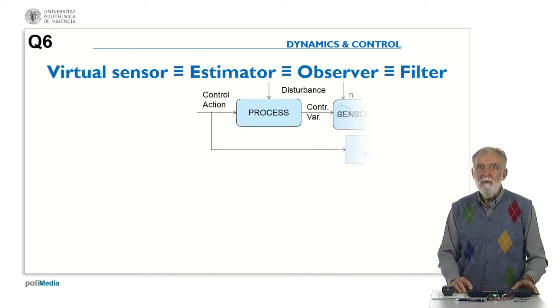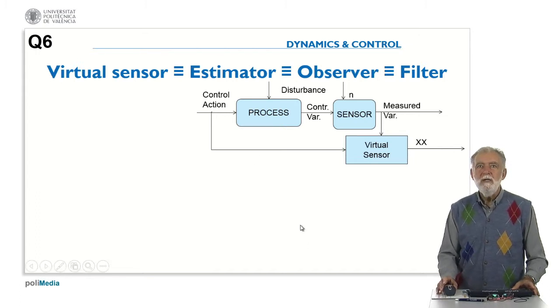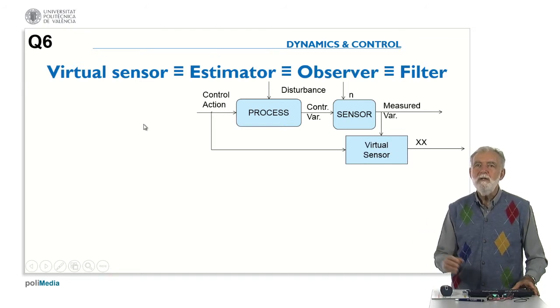Probably you remember that the scheme of a virtual sensor is something like that. You have the process, you have the sensor, the real sensor, and then you have the virtual sensor that based on the measured value and the control input, the control action, and of course the model of the plant, we can generate XX, which is some information.